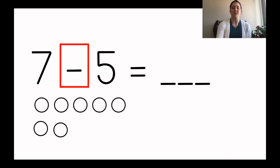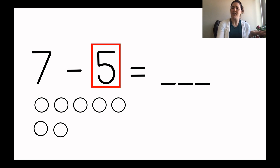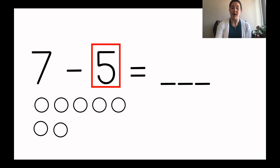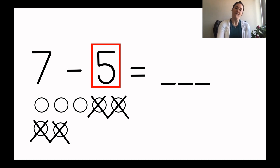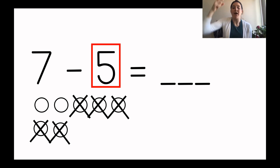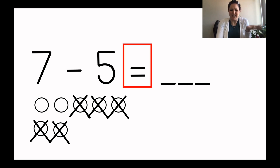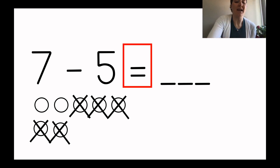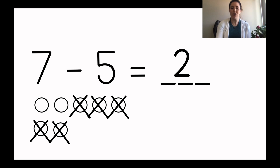I see the minus symbol, so that means I'm going to show some going away — I'm going to cross some off. I cross off five because it says seven minus five. I had seven circles to start, and then minus five — I crossed off five. Now I want to know what does that equal. I'm going to count the circles that are not crossed off. I see one, two circles left, so I'll write a two. Seven minus five equals two.